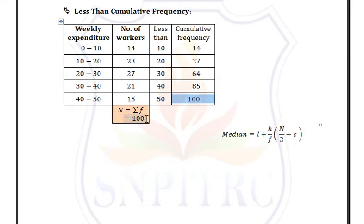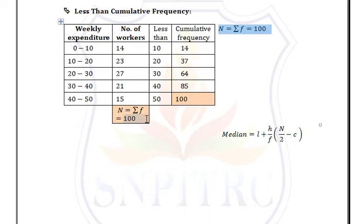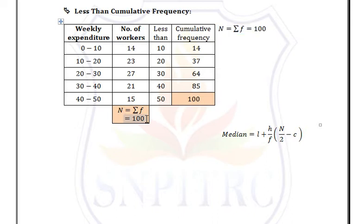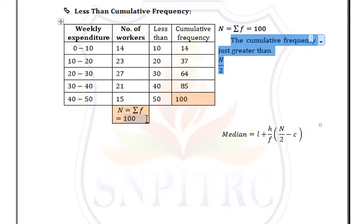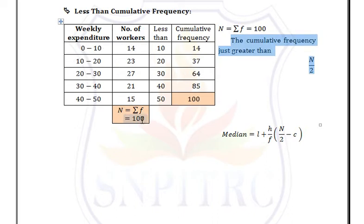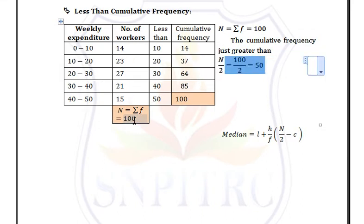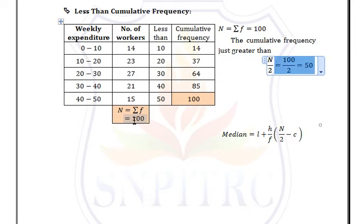In less than cumulative frequency, the last value equals capital N, which is summation F. Now find the cumulative frequency just greater than N/2. Here N is 100, so N/2 = 50, and the cumulative frequency greater than 50 is 64.